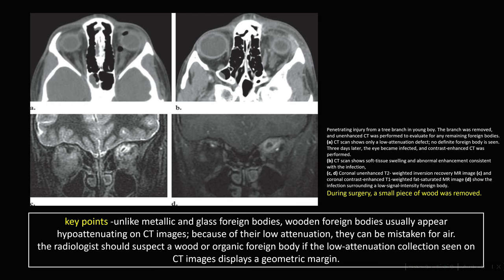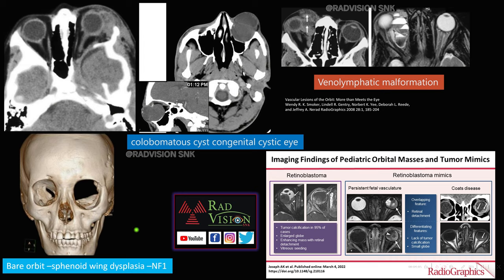Next, a young boy with a penetrating injury from a tree branch. There is free air or gas at the central orbit. Three weeks later there is orbital cellulitis — a hypointense line-like structure surrounded by collection showing peripheral enhancement — representing a retained tree branch with secondary infection. Unlike metallic and glass foreign bodies, wooden foreign bodies appear low-attenuating on CT and can be mistaken for gas. Whenever you see a gas-like or low-attenuating structure in the orbit with a history of tree or organic branch injury, suspect a wooden foreign body.